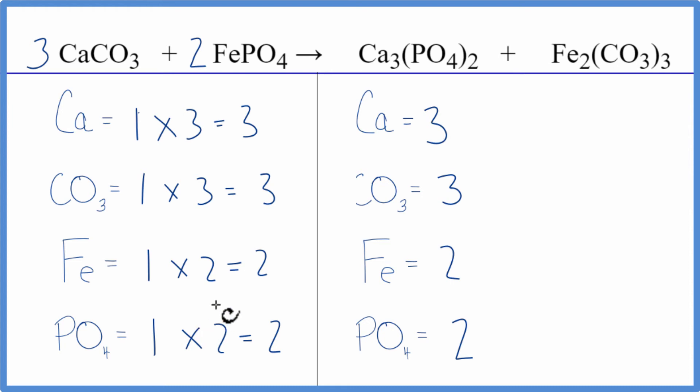This equation's balanced. So you can see the utility of counting these polyatomic ions up as just one item if they appear on both sides of the equation. Makes it a lot easier and less prone to error.